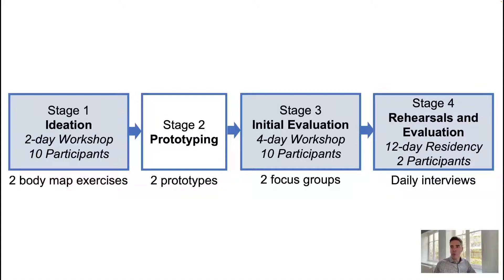Our stage 1 consisted of a sketching workshop over 2 days, where 10 dancers created movement exercises and then sketched body maps based on those exercises. In stage 2, our research team developed prototypes to create interactive visuals from the body maps generated, across 3 months. In stage 3, over 4 days, the 10 dancers tested our systems and then provided feedback and suggestions in two final focus group sessions, one per prototype.